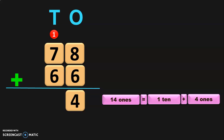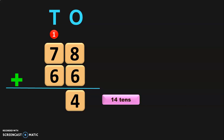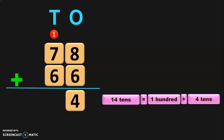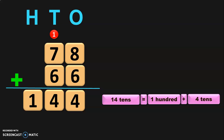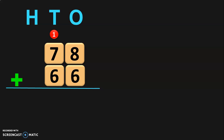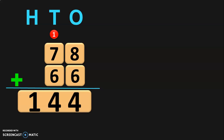Now, add the digits in the 10's place. 1 plus 7 will give you 8, and 8 plus 6 will give you 14. So, you have 14 tens now. 14 tens can be regrouped as 1 hundred plus 4 tens. So, retain the 4 tens in the 10's place and move the 1 hundred to the next place value, which is the 100's place. So, whenever you regroup the 10's place in a 2-digit number, you always get a 3-digit number. The sum of 78 plus 66 will give you 144.